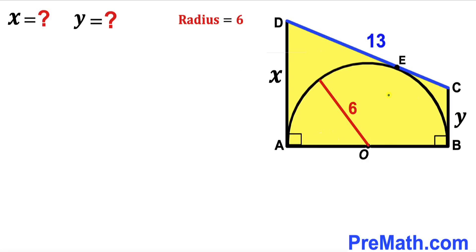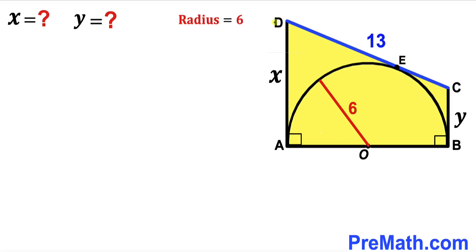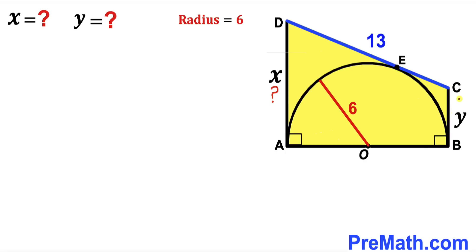Welcome to pre-math. In this video we have a semicircle with center O fully inscribed in a trapezoid ABCD. The radius of this semicircle is 6 units, side CD is 13 units and is tangent to the semicircle at point E. Side AD is X units and side BC is Y units. Our task is to find the values of X and Y.